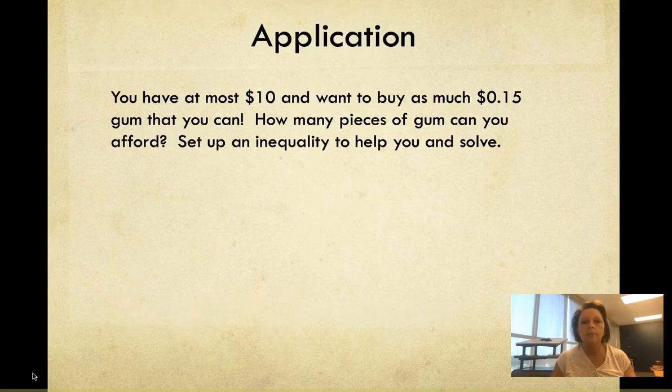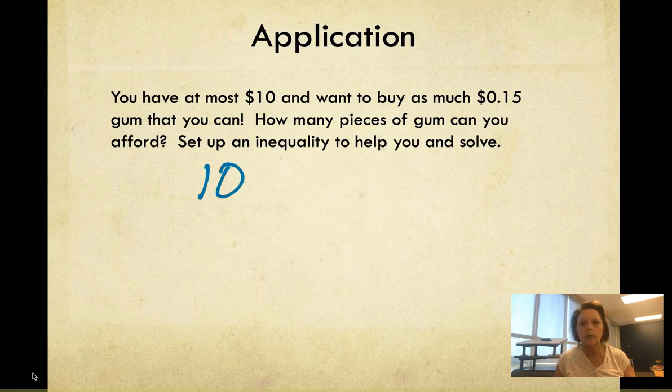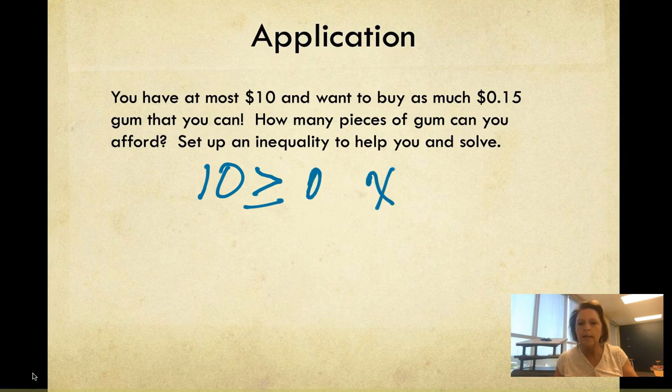Now our last problem says you have at most $10 and want to buy as much 15-cent gum that you can. How many pieces of gum can you afford? Set up an inequality to help you and solve. Well, let's think about this. I've got $10, that's the most I have, so that is the top number. Everything else has to be less than that. So everything has to be less than or equal to $10. I'm going to buy gum and each piece is 15 cents. So let's let x represent the number of pieces of gum. I'm going to multiply that times 15 cents.